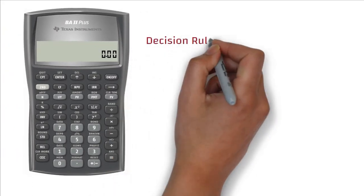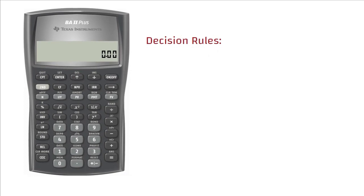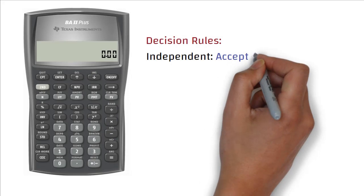Decision Rules. If project A and B are independent, select project that has IRR greater than WACC. So, both project A and B should be accepted.